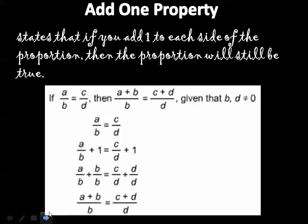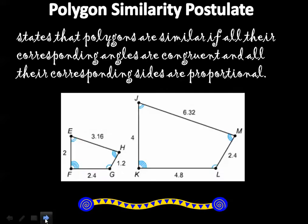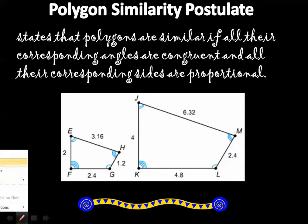If you'll remember, we learned about some properties earlier — the means and extremes property, where we cross multiply and divide. In this lesson we're going to use the Add One Property, which states that if you add one to each side of a proportion the proportion will still be true, as long as you add it to both sides. We also have the Polygon Similarity Postulate, which states that polygons are similar if all their corresponding angles are congruent and all their corresponding sides are proportional.